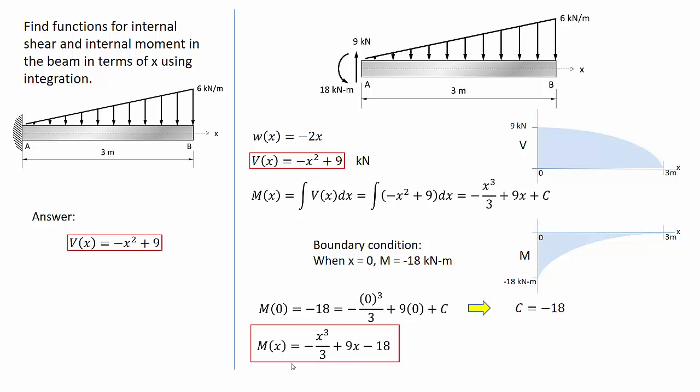Now I have an expression for the internal moment in the beam as a function of x. And the unit is going to be kN meters. I can check it because I have one more boundary condition that I didn't use. I can evaluate this function at x equals 3 meters.